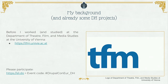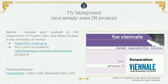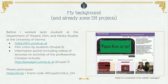Before I started at the ACDH, I worked at the Department of Theatre, Film and Media Studies at the University of Vienna, where I'm also trained as a scholar. There, in Drupal 6, we initiated a website where students published reviews on movies shown at the Vienna International Film Festival. In Drupal 7, I created a website for Professor Christian Schulte's research team, collecting publications, events, and recordings of lectures.